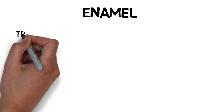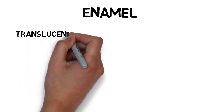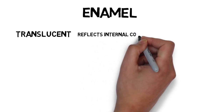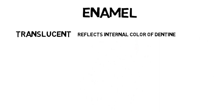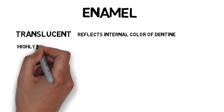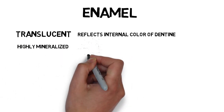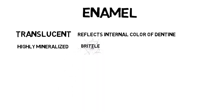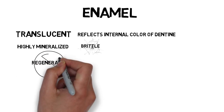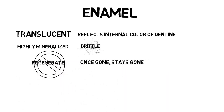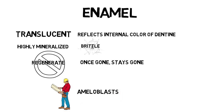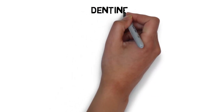First, we'll discuss enamel. One thing we often mistake is that enamel is not white in color — it is actually translucent and refracts the underlying dentine, making it glass-like in nature. Secondly, it is a highly mineralized structure — about 96% inorganic. It is the hardest natural substance in our body, even stronger than bone. However, being highly mineralized and 96% inorganic, it is brittle in nature and can crack. Importantly, enamel has no regenerative capabilities — once it is gone, it will not regenerate. The cells that form enamel are known as ameloblasts.